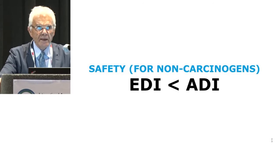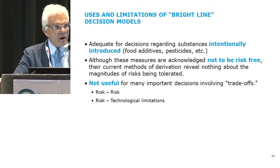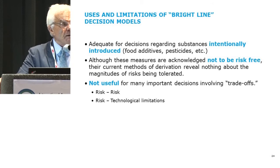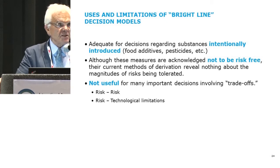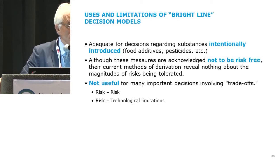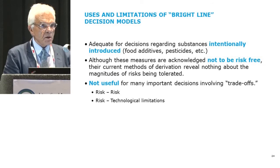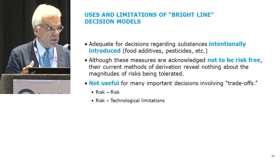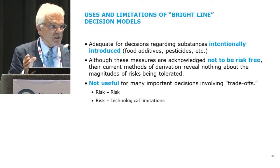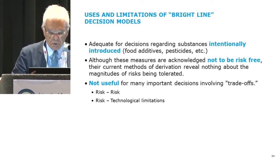That bright line decision works quite well for certain kinds of chemicals — chemicals that are intentionally introduced into food or other parts of the environment. The intentional introduction allows you to say: if it's not safe, you can just remove it. It's useful for large numbers of decisions involving food additives, pesticides, and things of that nature. But there are many important decisions involving complicated contaminants of food or the environment that you just cannot will to go away. For those, a more complex risk model is useful, where you have technological limitations on your ability to control the exposure.